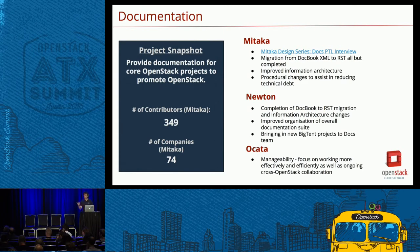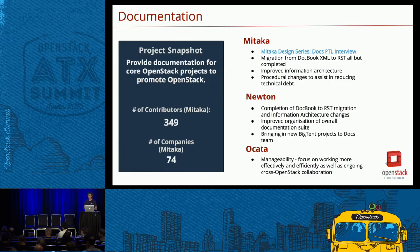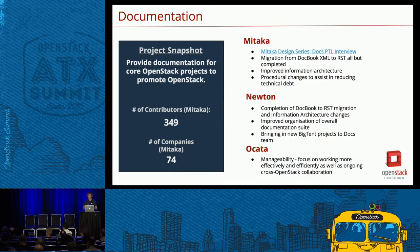Another example of a 100-foot view is the documentation project — a very important part of OpenStack. For Mitaka, they started the process of migrating from DocBook XML to RST, which was almost completed in Mitaka and fully complete in Newton. For Ocata, the emphasis is more internal — making their own workflows more efficient within the documentation team, and also making it easier for the various projects involved in OpenStack to contribute to the documentation project directly.